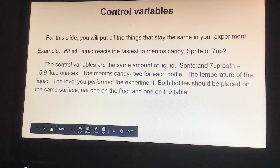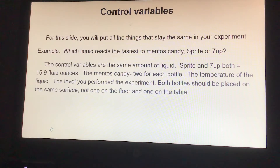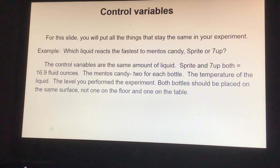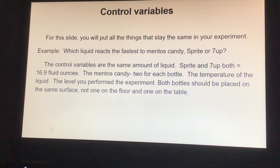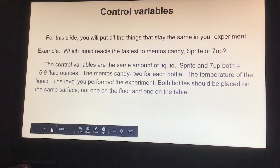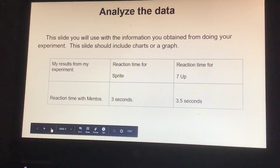For the control variables slide, you will put all the things that stay the same in your experiment. Using the same example — which liquid reacts the fastest to Mentos candy, Sprite or 7UP — the control variables are: the same amount of liquid (Sprite and 7UP, both 16.9 fluid ounces), two Mentos candies for each bottle, the temperature of the liquid, and the level surface — both bottles on the same surface, not one on the floor and one on the table.